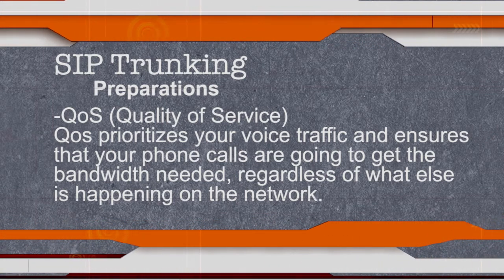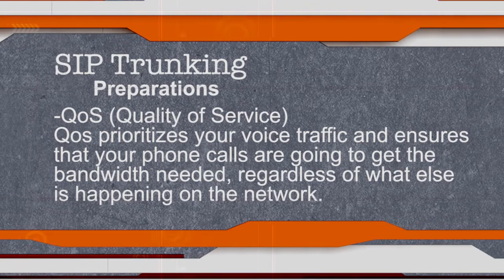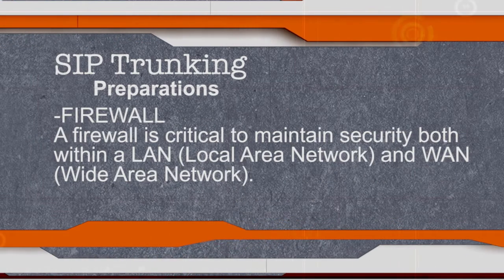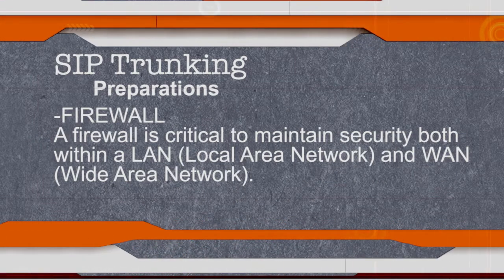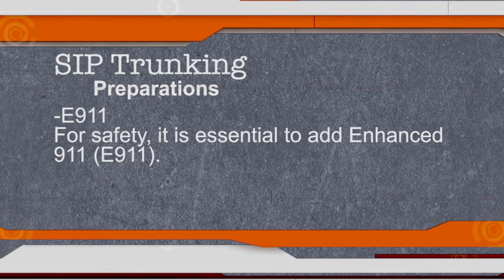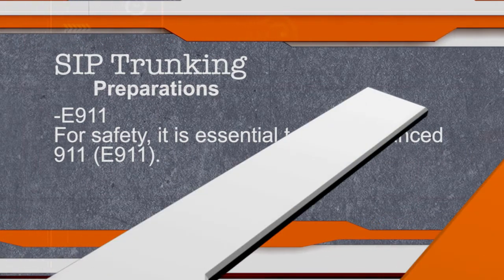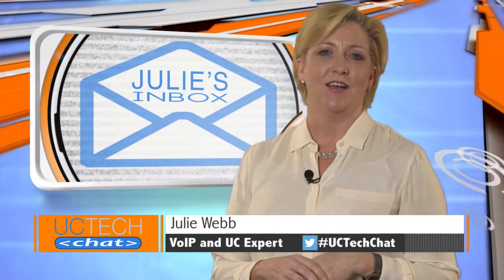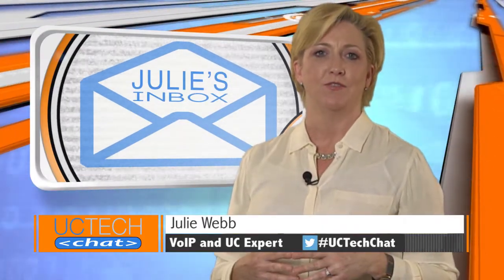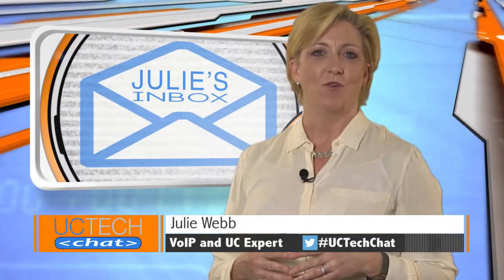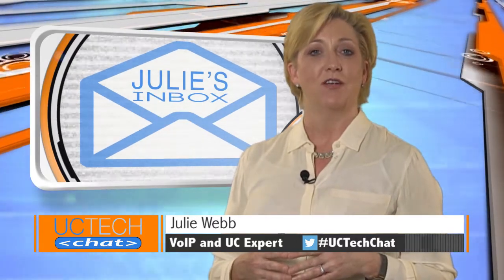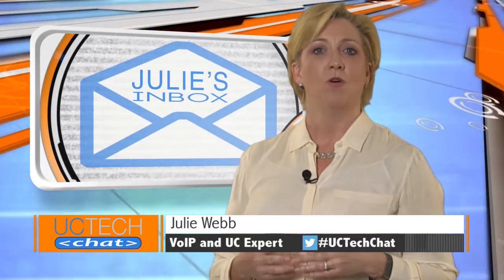Equally important to bandwidth is Quality of Service, or QoS. QoS prioritizes your voice traffic and ensures that your phone calls are going to get the bandwidth needed, regardless of what else is happening on the network. A firewall is critical to maintain security, both within a LAN and WAN. For safety, it is essential to add E-9-1-1. Thank you for the question, Evie. If you have questions for us, please send them to hashtag UCTechChat and we'll either answer them here on the show or via Twitter.